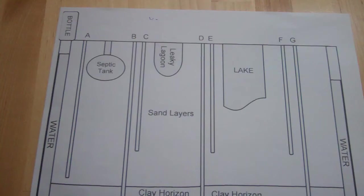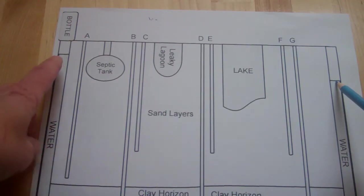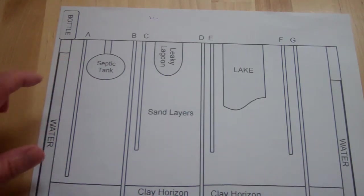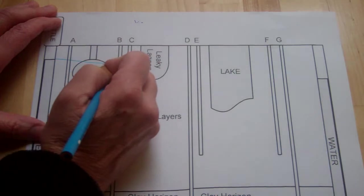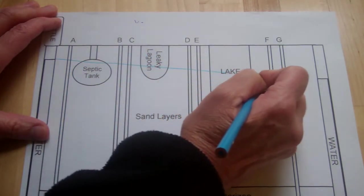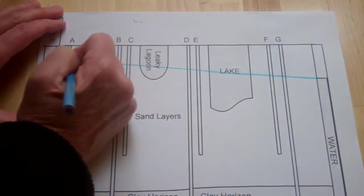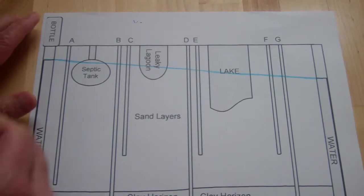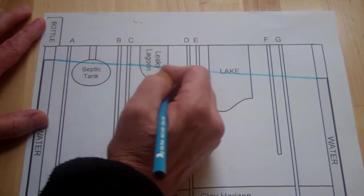On the right-hand side there is another column showing water at a different level. Since one level is higher than the other, the landscape is somewhat slanted downward and the water table follows that line. That line I just drew is the water table — the most important thing to identify first.